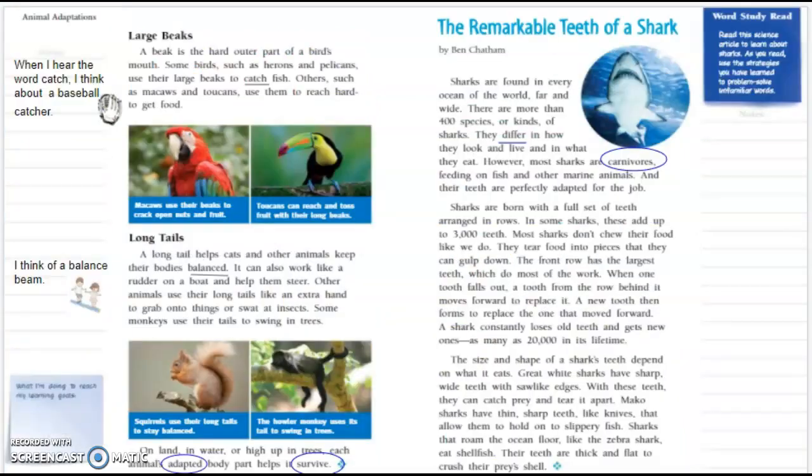As we move on to the next page, we're going to begin with large beaks. A beak is the hard outer part of a bird's mouth. Some birds such as hens and pelicans use their large beaks to catch fish. Others such as macaws and toucans use them to reach hard to get food.